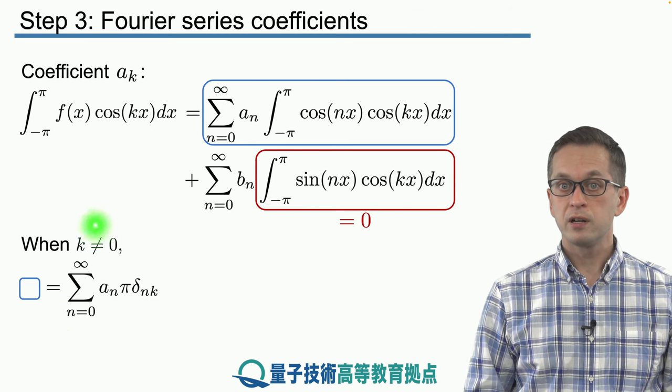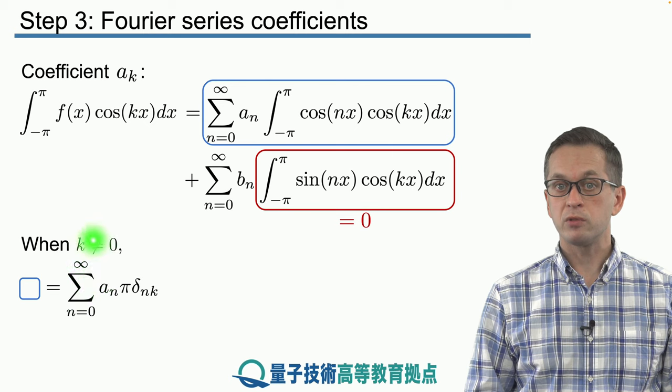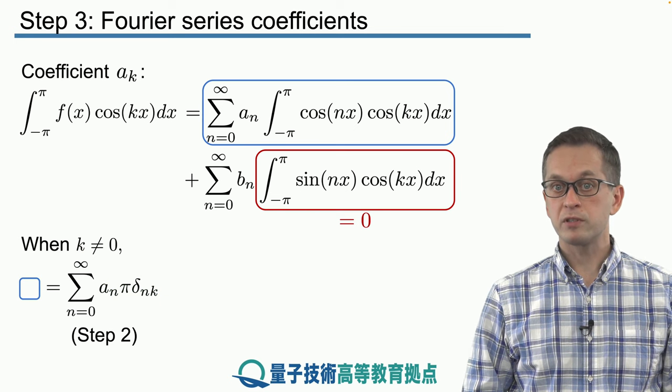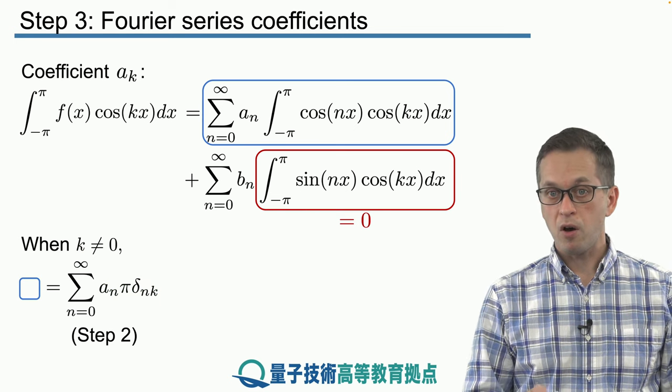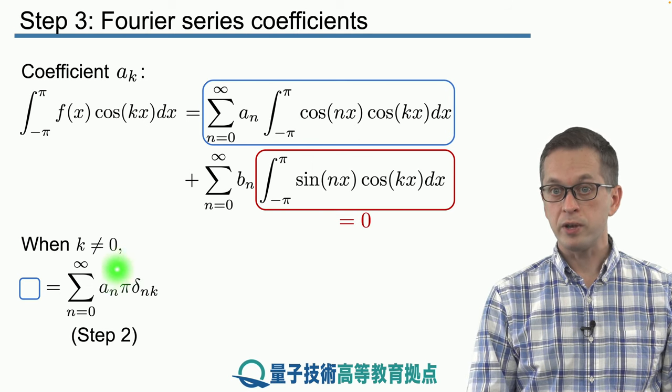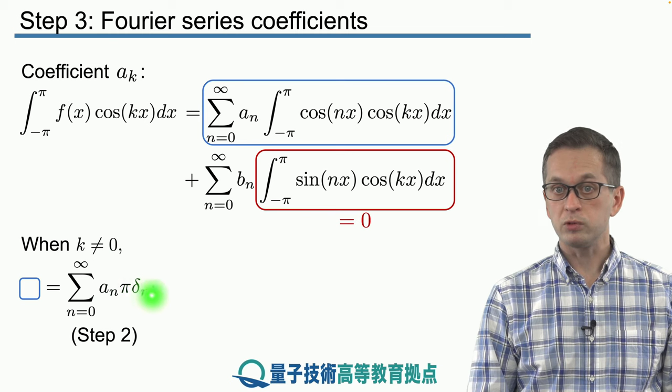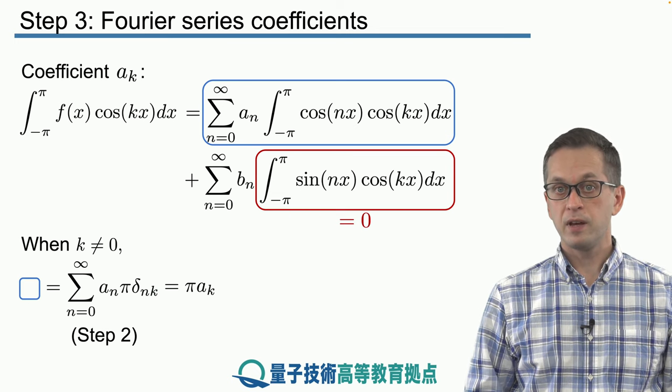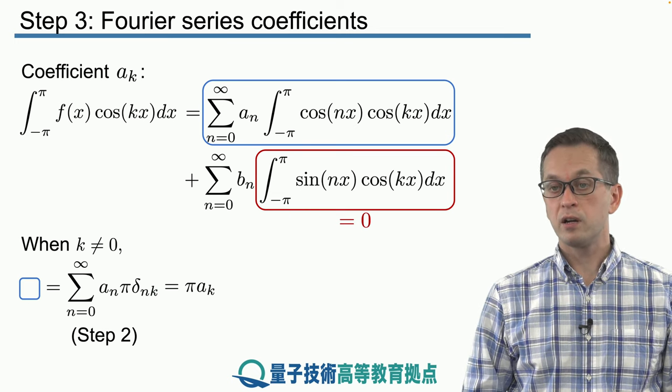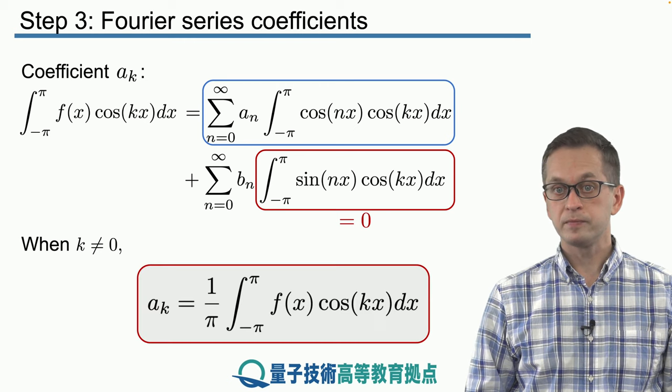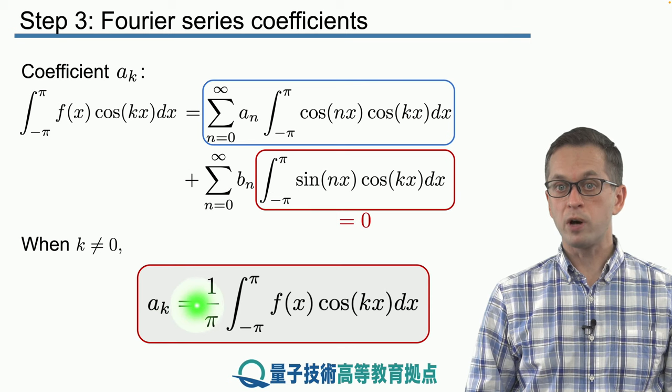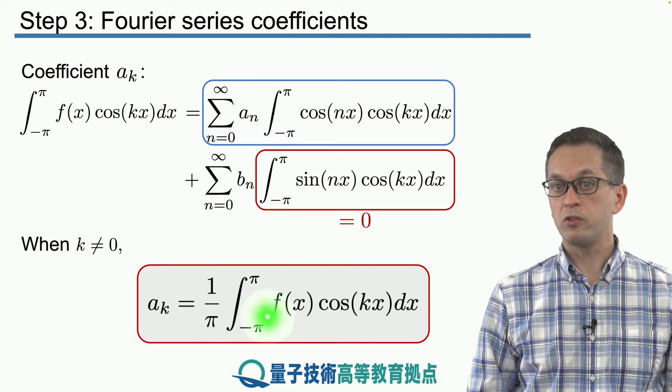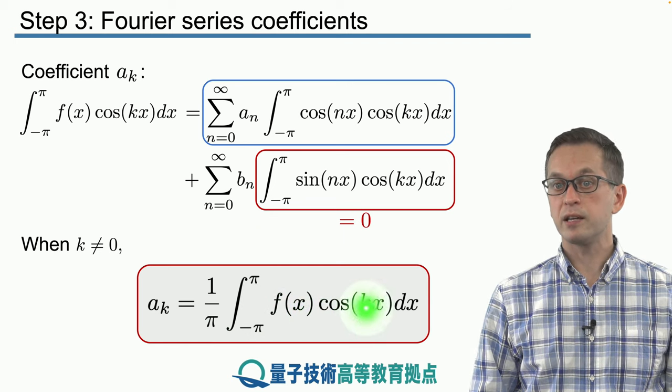This integral over here is just the sum n going from 0 to infinity of a_n times pi times delta_nk. We derived this condition in step two. So all of these terms in here are 0 except for a single term when n is equal to k. Therefore, the whole integral in the blue box is equal to pi times a_k. And this is our formula for the remainder of the coefficients a_n. And we have a_k is equal to 1 over pi times the integral over the period of the function, in our case from minus pi to pi, of the function itself, f(x), times cos(kx) dx.